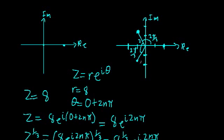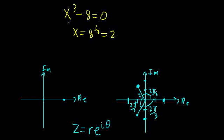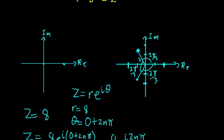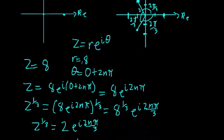A couple of important things to keep in mind about these three points. First, they're equally separated — they have the same radius value, but they're all an equal angle apart from each other: 2 pi over 3, 2 pi over 3, and 2 pi over 3. Second, when we took the cube root, we got exactly three points on our complex plane — and those are our three solutions, the three values of the cube root of 8.